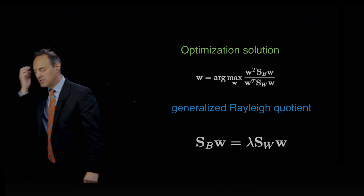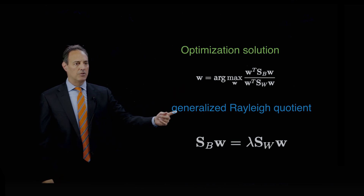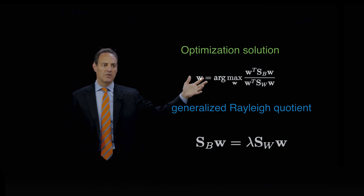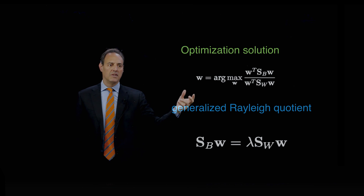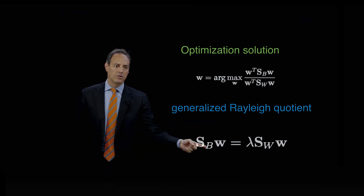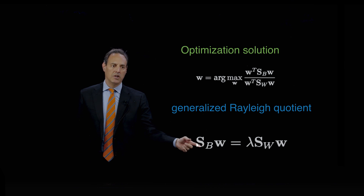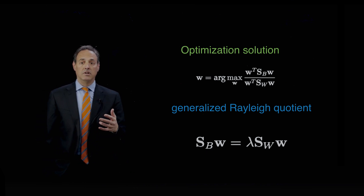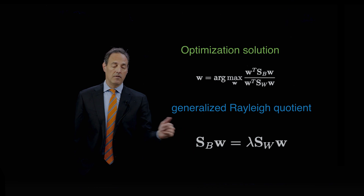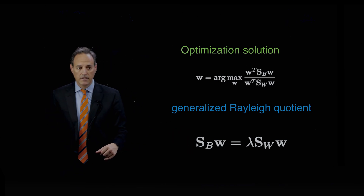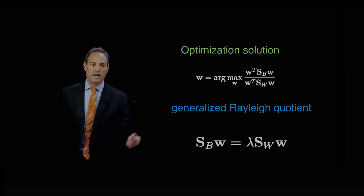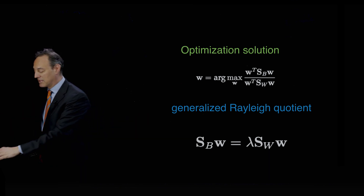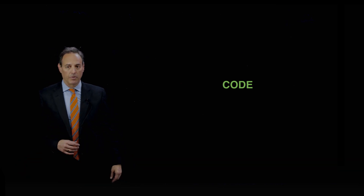This optimization solution is related to a generalized Rayleigh quotient. If you've done optimization before you'll recognize this structure. It's a generalized Rayleigh quotient, and you solve it as an eigenvalue problem: you take Sb times Sw, and the eigenvalue solution gives you w. So it's a linear solve — very nice. I solve for this line by doing an eigenvalue decomposition, and the w's are the eigenvectors of that generalized matrix problem.